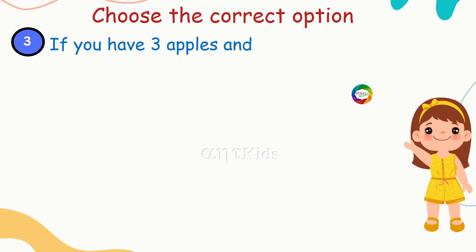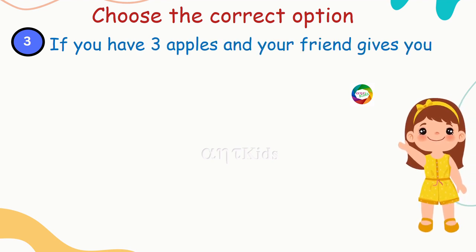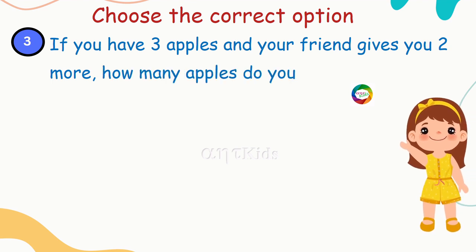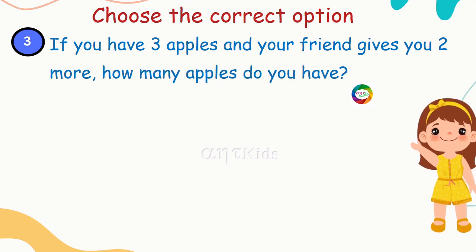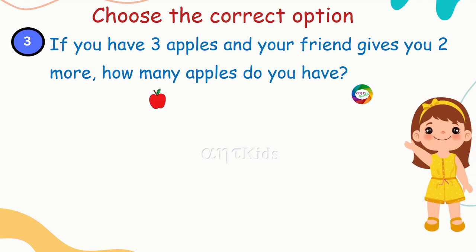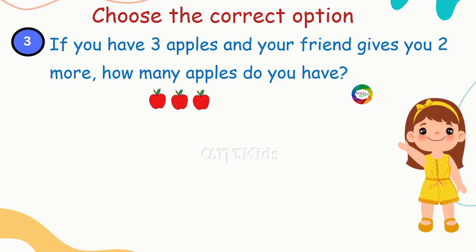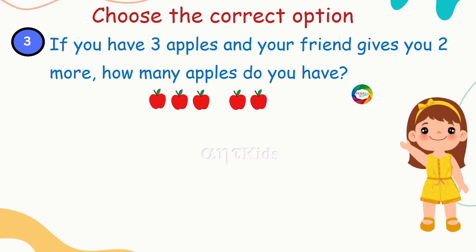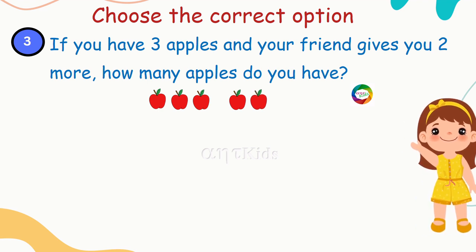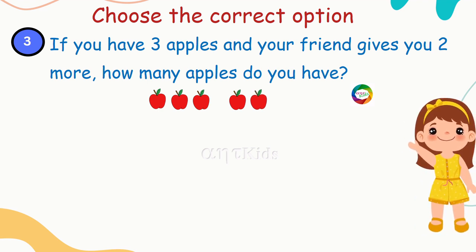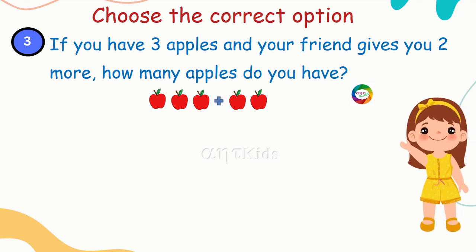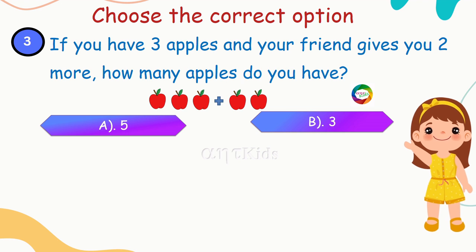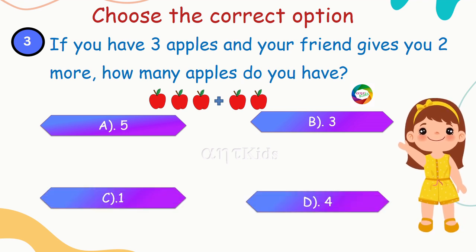Next question: if you have three apples and your friend gives you two more, how many apples do you have? You have three apples and your friend gave you two more, so you have to add to get the answer. Options: 5, 3, 1, 4.